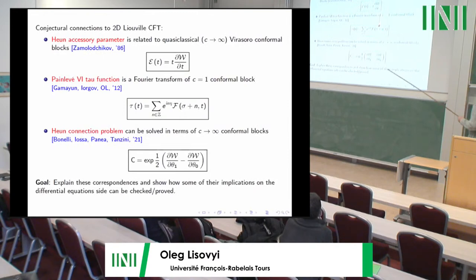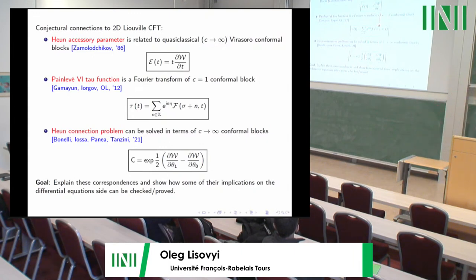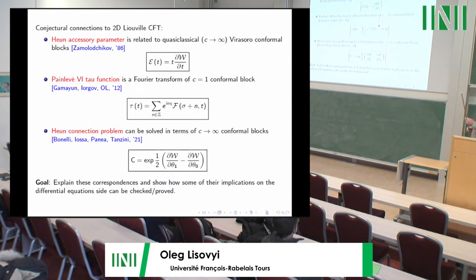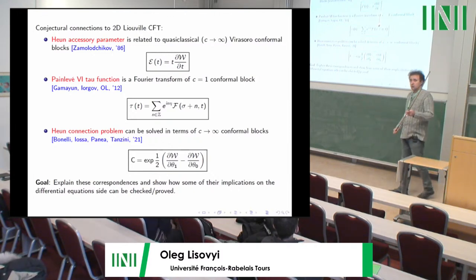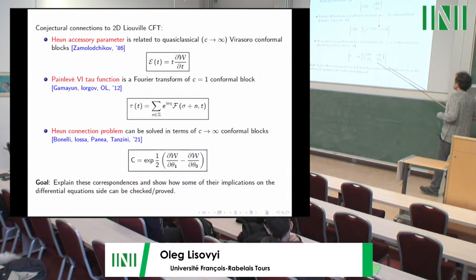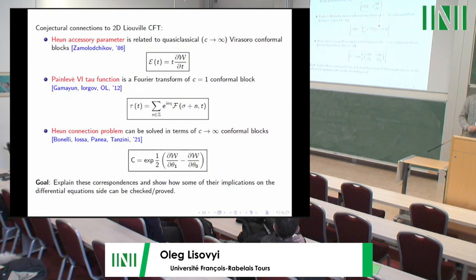Over the years a number of connections were discovered relating two-dimensional CFT to linear ODEs. Davide discussed one of them, the ODE-IM correspondence. I will be focusing on three other examples. The first is the conjecture by Zamolodchikov from the very early days of 2D CFT, which related the accessory parameter function in the Heun equation to the so-called quasi-classical conformal block.